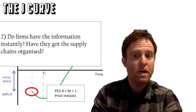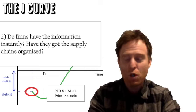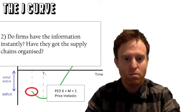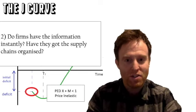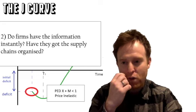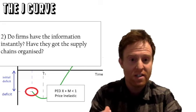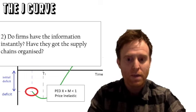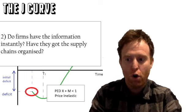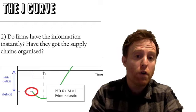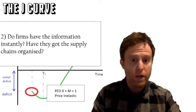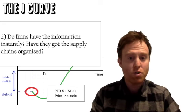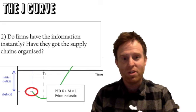Number two: do firms have the information instantly? I'm not talking about the exchange rates or news of devaluation. If you're going to change your suppliers, you have to consider the logistics and how you're going to suddenly change the supply chain and distribution of goods. Is it possible? How are you going to do it?